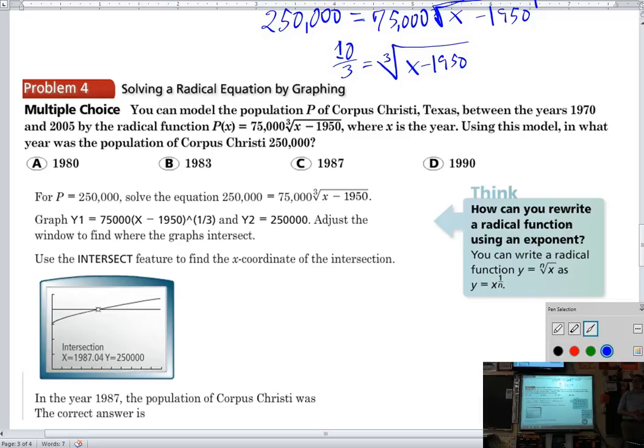We can cube each side. Cube your numerator, cube your denominator. So ten-thirds equals the cube root of x minus 1950, and that minus 1950 is stuck under the radical. What'd you get? Ten cubed is 1000, three cubed is 27. So 1000 over 27 equals 37.037. Because we cubed ten-thirds.